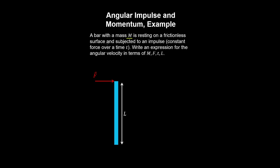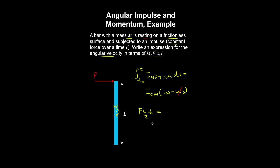A bar with mass m is resting on a frictionless surface and subjected to an impulse, which is a constant force applied over a time t. We're asked to write an expression for the angular velocity in terms of the following variables. Using the angular impulse-momentum equation, and noting that the bar rotates about its centre of mass, the angular impulse is simply the force times the moment arm times t. The moment of inertia about the centre of mass is mL²/12, and solving gives the angular velocity of the bar just as it begins to rotate.